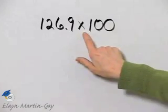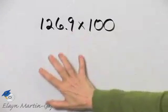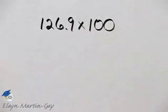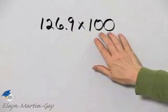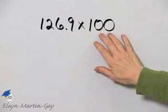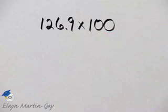We are to perform the indicated operation. You can multiply as usual, or you can notice that we are multiplying by a power of 10 and use a shortcut.